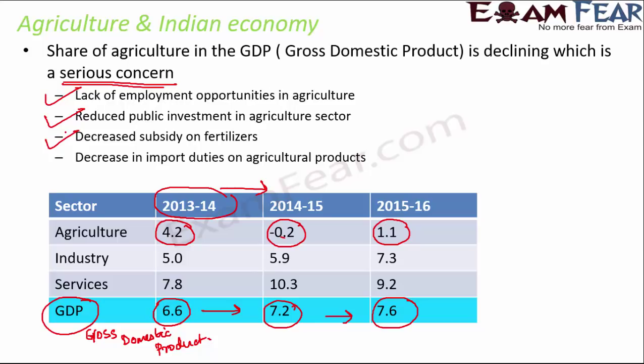Another effect is decreased subsidy on fertilizers. A subsidy means providing an item at a low cost so that it can be used by everyone — like the government providing things at subsidized rates to poor people. But the subsidy on fertilizers is decreasing, which means fertilizers are becoming very expensive for farmers to buy.